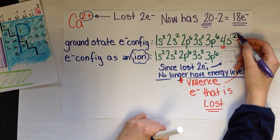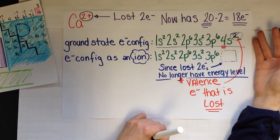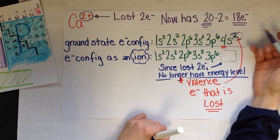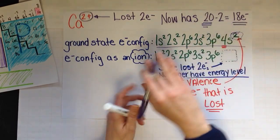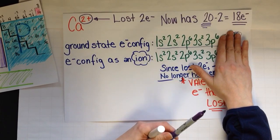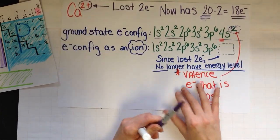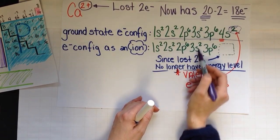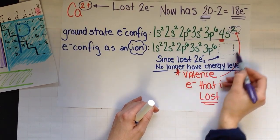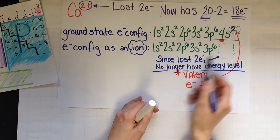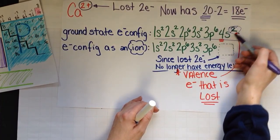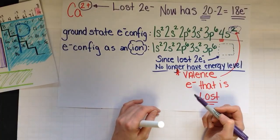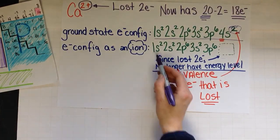So when I go to write this, if you notice when I lose two, there aren't any left in here. So I don't write a zero. Instead, I lose this entire energy level. So I've copied everything the same. 1s2, 2s2, 2p6, 3s2, 3p6. And notice I lost two electrons. So I no longer have that energy level. So I don't write it in. So this is your answer.